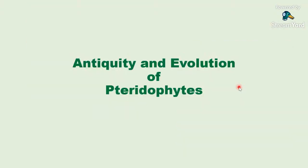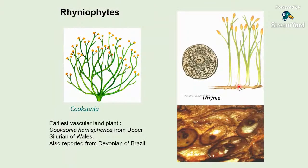Now I take you into the fourth dimension — the dimension of time — to introduce the antiquity and evolution of pteridophytes through the ages. The early land plants started with Cooksonia. Cooksonia hemisphaerica has the status of earliest vascular land plant, from the upper Silurian of Wales and also reported from Devonian of Brazil. These plants had dichotomously branching axes with terminally present, nearly spherical isporangia. Another plant belonging to rhyniophytes is Rhynia, with straight dichotomously branching aerial branches bearing oval sporangia — found as petrifactions.